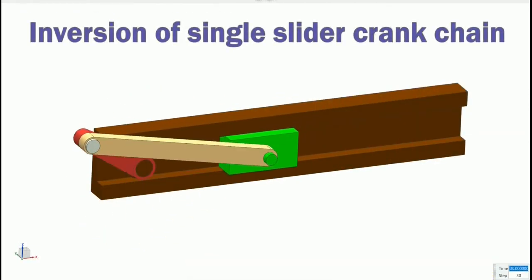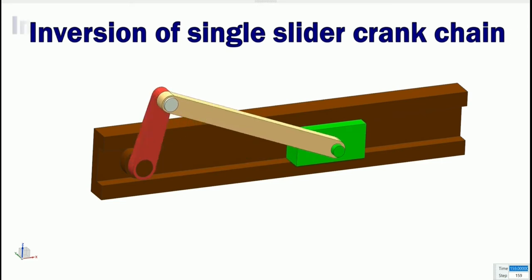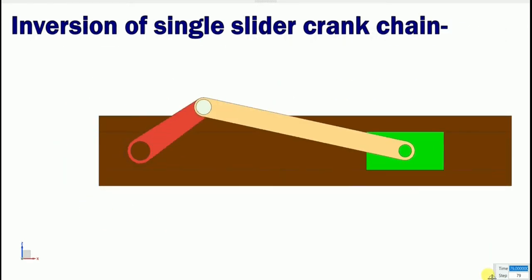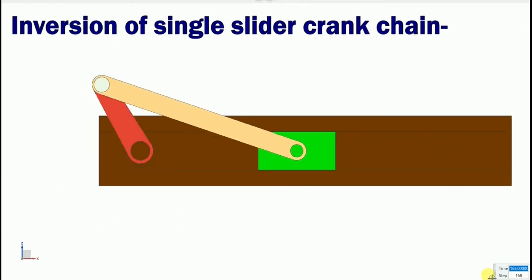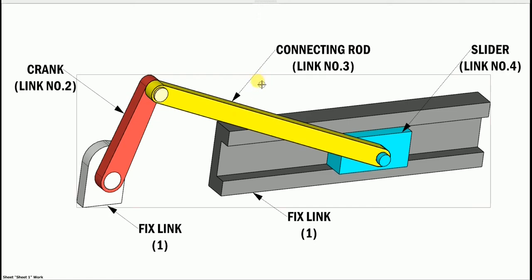It is an inversion of single slider crank chain. This inversion is obtained when link number 3, the connecting rod, is fixed.